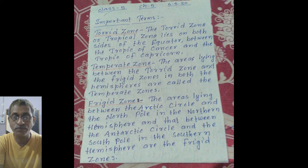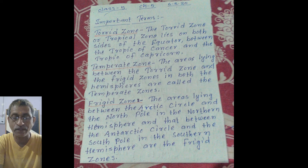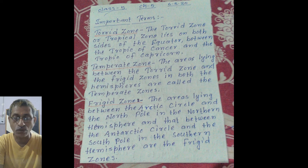3. Frigate zone. The area laying between the Arctic Circle and the North Pole in the Northern Hemisphere are the Frigate zones.